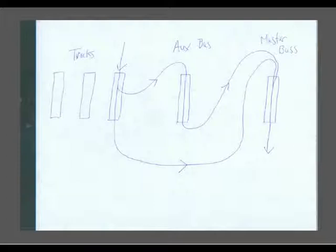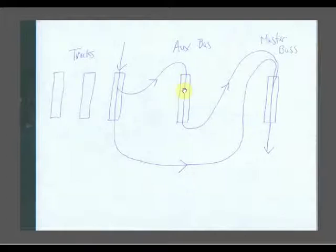When would you use this? The typical use is when you are adding reverb. You have three tracks here — you want to put a little bit of reverb on each one, or maybe a lot on this one, a medium amount on this one, and a little on this one. You control this by how much signal you send through the auxiliary send to the auxiliary bus. Over on the auxiliary bus, you have a reverb set to 100% wet, because you don't want any dry signal — you've already got a dry signal coming out through the direct path. So you control the amount of reverb on each track by how much you send to the auxiliary bus.